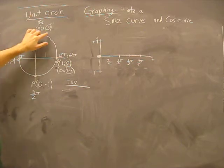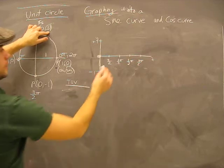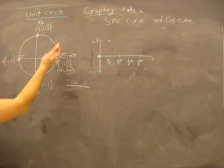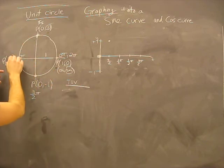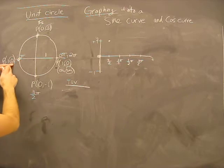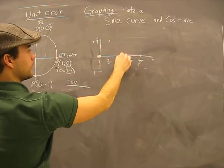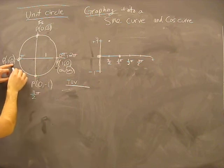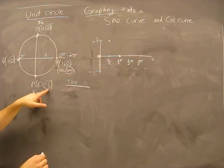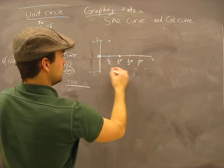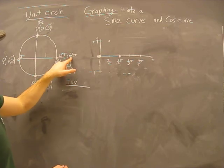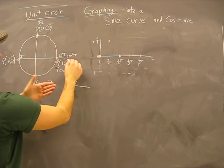At pi-halves, our sine value is one, so we're at a height of one. At one pi, our sine value is zero. Continuing around, at three pi over two our sine value is negative one, so there's negative one. And at two pi, our sine value is zero again.